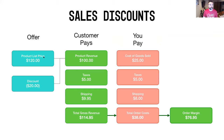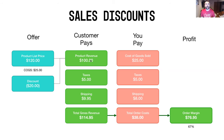In this typical model, the product list price is $120, cost of goods sold is $25, and the discount offered is $20 off. So the customer pays $100 in product revenue, plus $5 in taxes and $9.95 in shipping, giving a total gross merchandise value of $114.95.